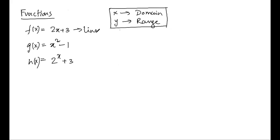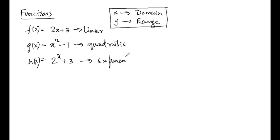The first example is a linear function, the second is quadratic or polynomial. If you have x cubed then it's a cubic, and so on — these are all polynomials. The third type is an exponential function.